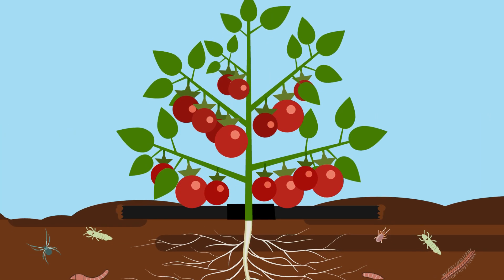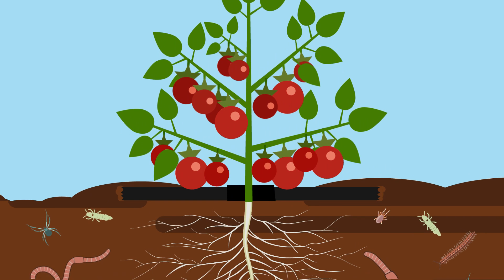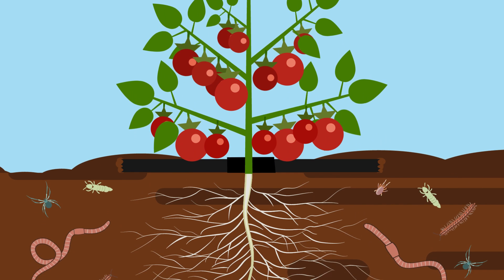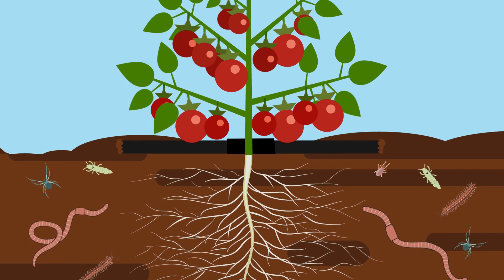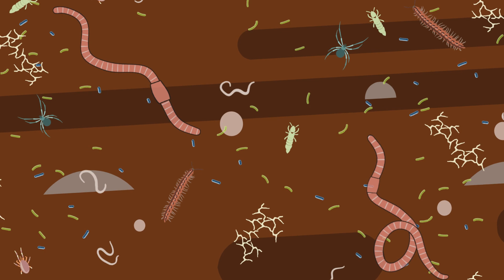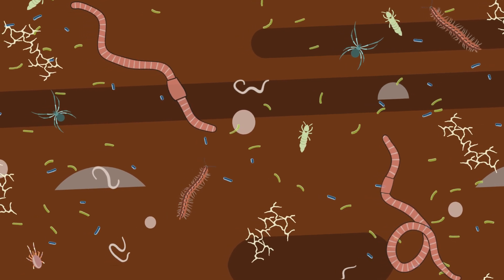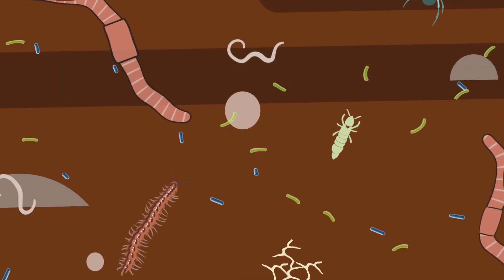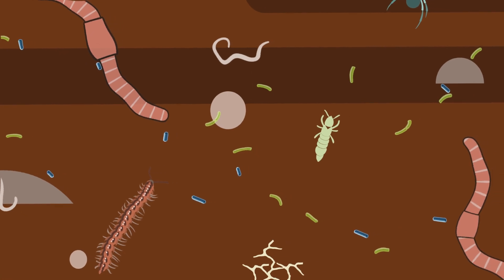Simply put, Reclamel inhibits the bad guys and is gentle on the good guys, tipping the balance back to a healthy, functioning soil ecosystem. The communities of soil organisms live in a harmonious and delicate balance, requiring careful management to keep a fully functioning healthy soil.